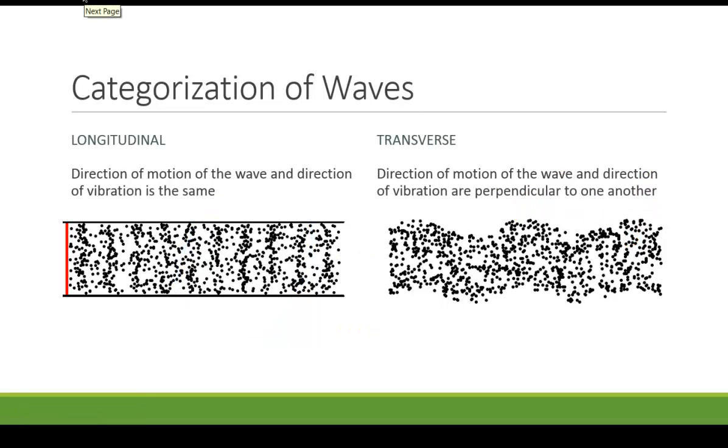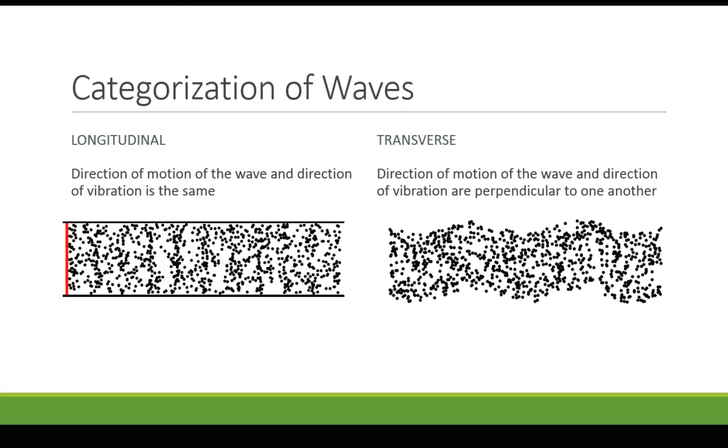We have different ways of categorizing waves. Our first one is if they are longitudinal or transverse, and these categorizations depend on the direction of the vibration compared to the direction that the energy is traveling. So with our longitudinal wave here, you see that these objects are vibrating back and forth.